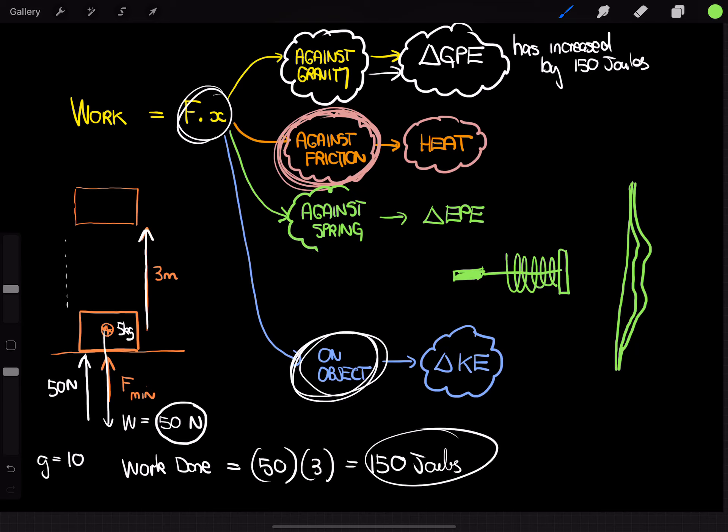then any work you do against the spring gets converted into a different type of energy which is called elastic potential energy. Now, elastic potential energy is the energy stored in a spring. And that's why, for example, if you applied a force on this plunger, this pinball plunger, and compress the spring, then the energy is stored inside the spring until you release it, and then that gets converted back into energy of motion of the ball bearing as it's launched in your pinball machine.